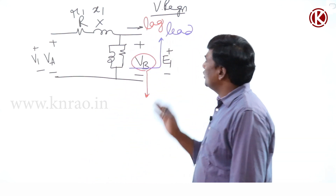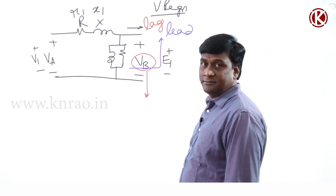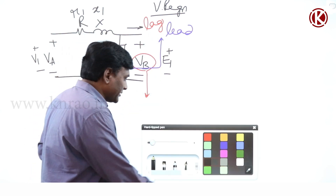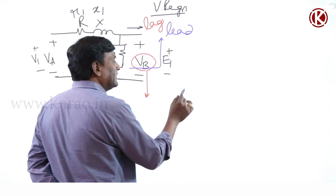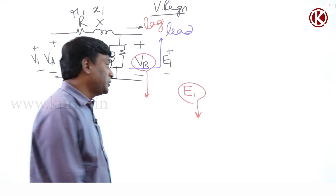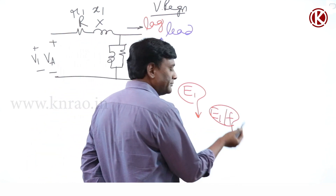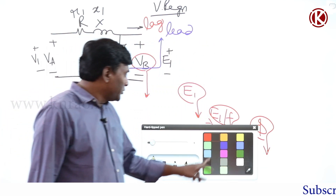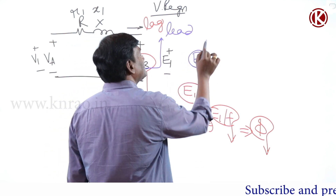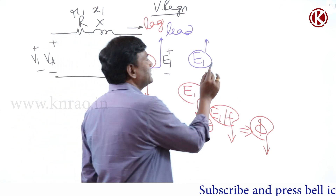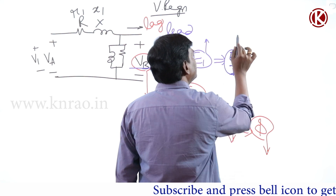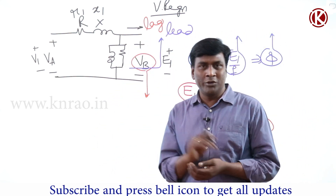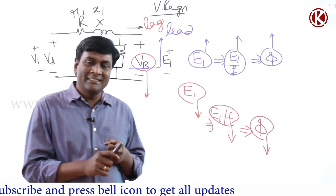To be precise, is the transformer operating flux constant or variable? At the leading condition, this voltage will increase; at lagging condition, this voltage will reduce — so voltage across the shunt branch reduces. At lagging conditions, E1 magnitude will reduce, so E1 by F reduces, meaning operating flux reduces. At leading power factors, E1 increases, meaning operating flux increases.